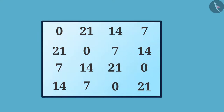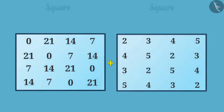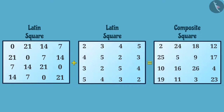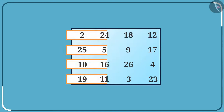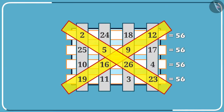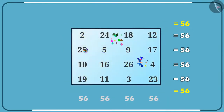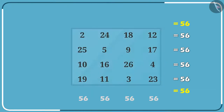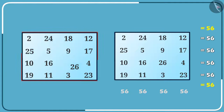Now I will undertake the cell to cell addition of both Latin squares and get the composite square. In this square, the sum of all rows, columns and diagonals is equal. Hence, this is a magic square, and you can see the numbers in the square given by you are rearranged to form a magic square.